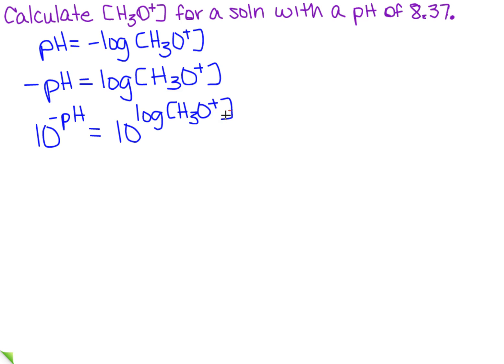Now when I do that, what happens on the right-hand side? These two are opposites, so they cancel out. I get 10 to the minus pH equals the hydronium concentration.